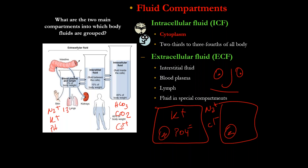Sodium is 135 to 145. Potassium is 3.5 to 5. pH is 7.35 to 7.45. Bicarbonate is 22 to 26. Carbon dioxide is 35 to 45. And calcium is between 8.5 and 10. Those are six values you must remember.